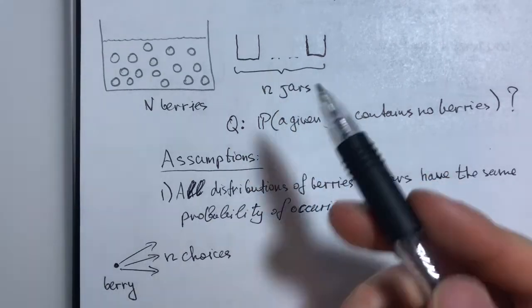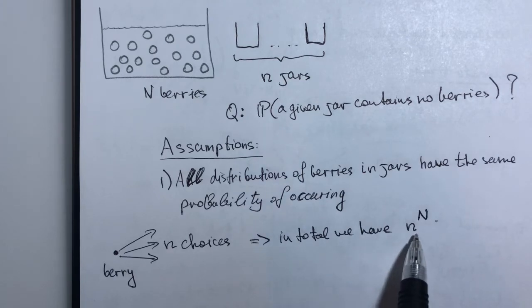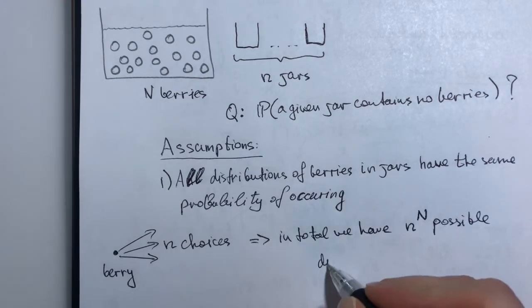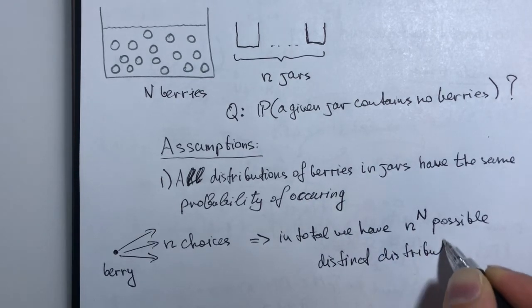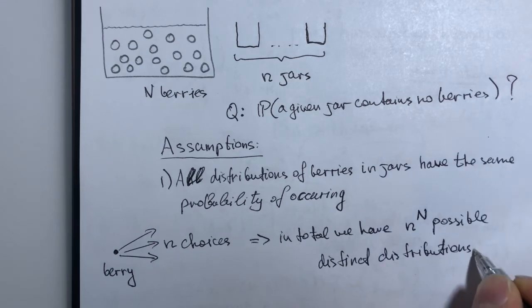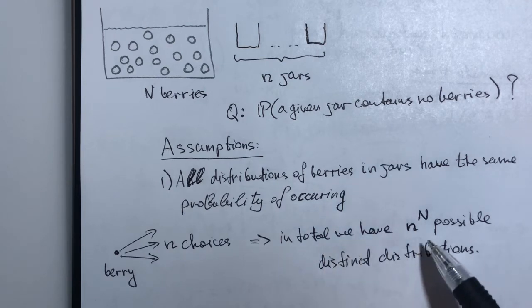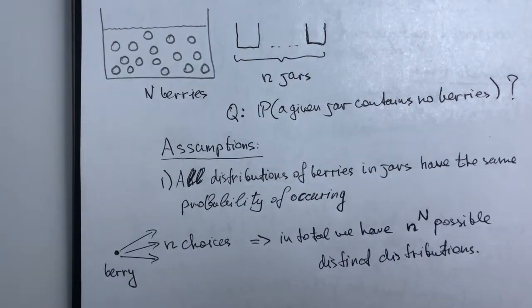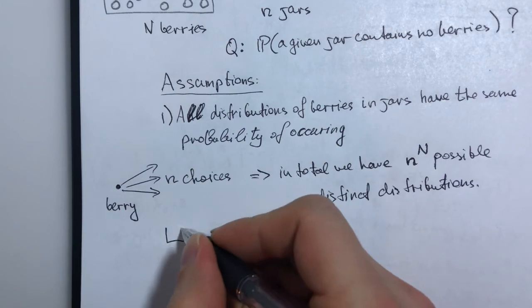Each berry has N choices—it has N jars that it can choose to be inside. That means that in total we have N to the N possible distinct distributions. By knowing simple combinatorics, we know that in total we have N to the N possible distributions of all the big N berries into n jars.